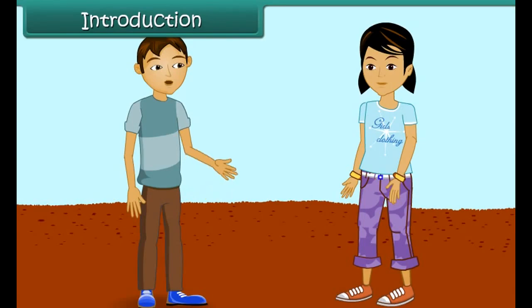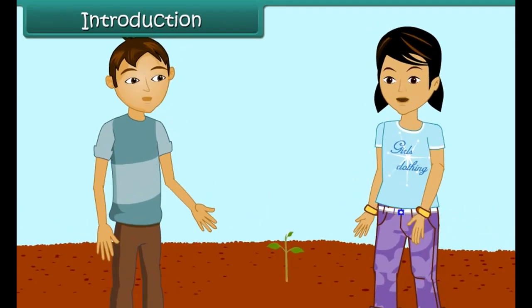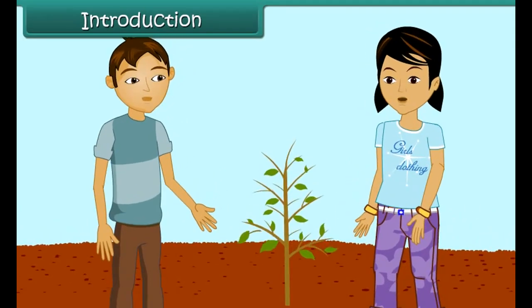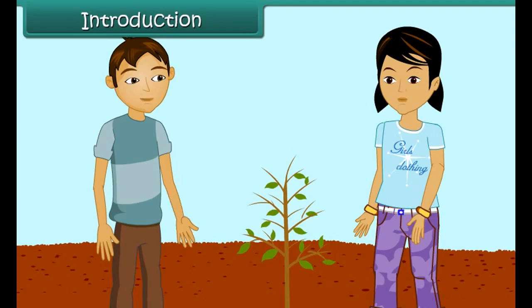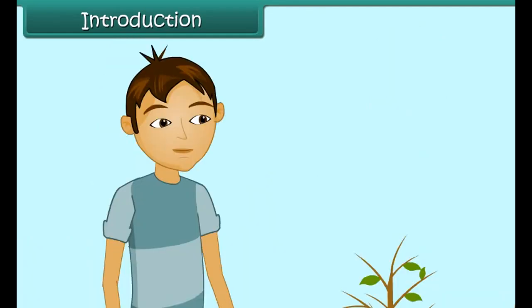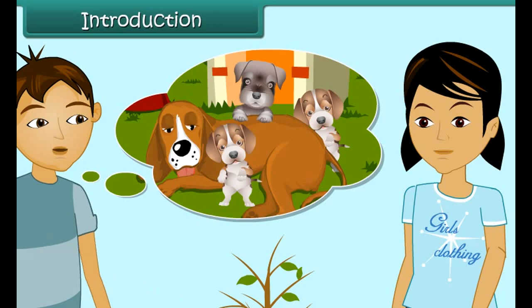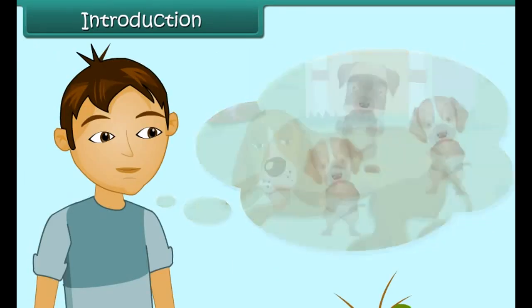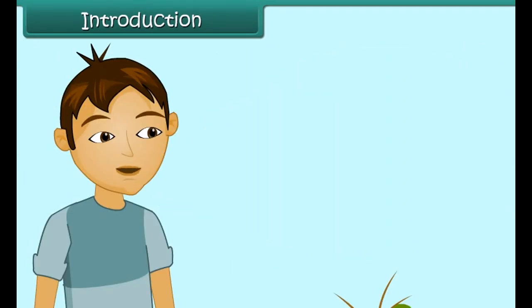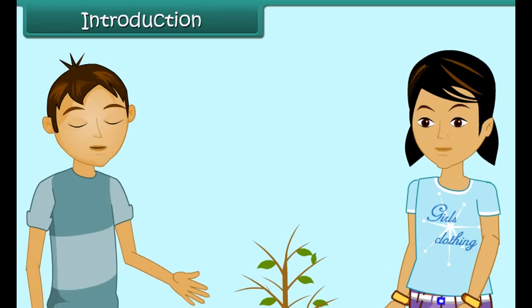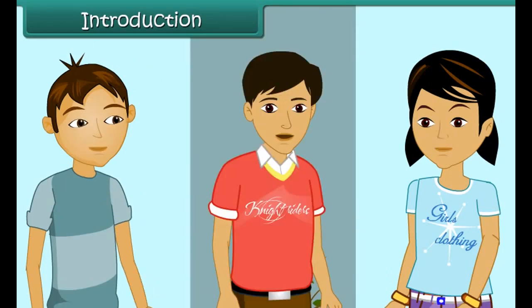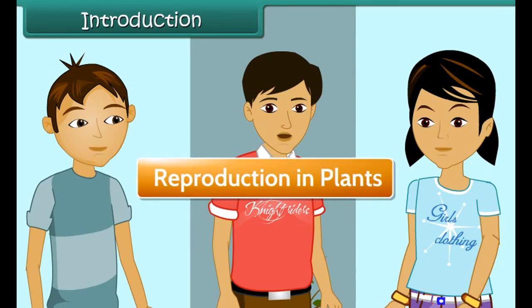But why are you sowing these seeds? It's simple Aman. When seeds will germinate in the soil, a new plant will grow up. That's interesting. Do all plants grow due to seeds? No Aman. There are various methods by which plants reproduce. You mean to say that like animals, plants also reproduce? Yes Aman. This has created an interest in me to learn about reproduction in plants. Come children, let us learn about reproduction in plants.